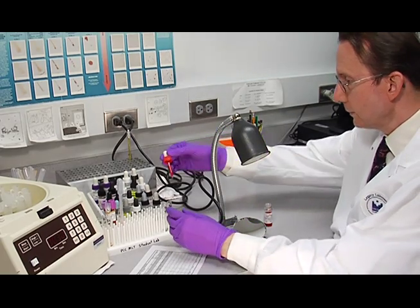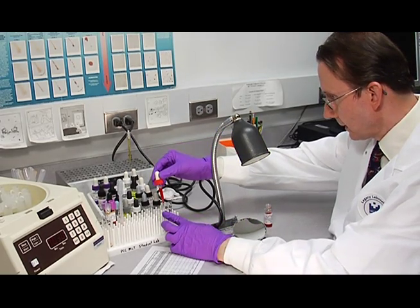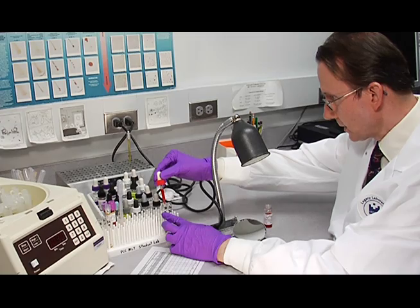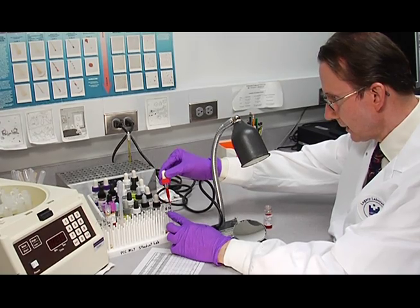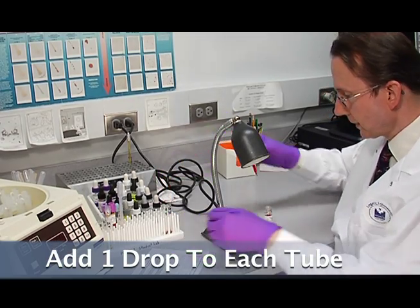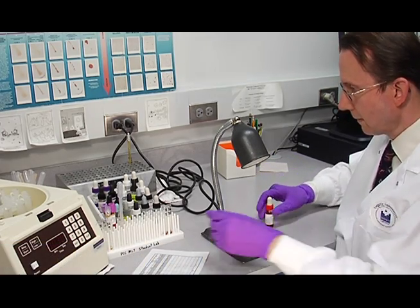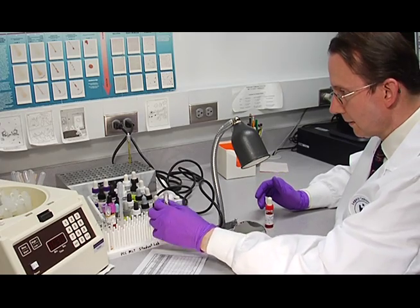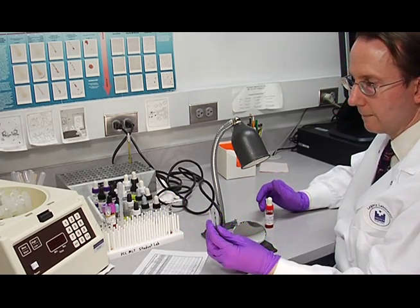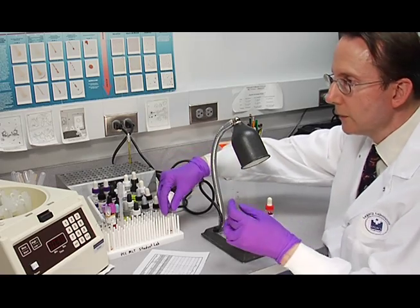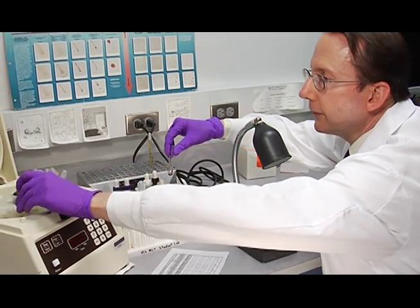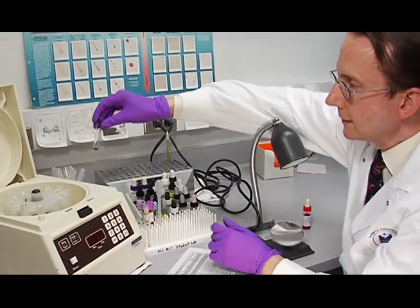So now I'll add one drop of the control cells, the check cells, to each of these tubes. And then we'll spin those down for 30 seconds in the centrifuge.